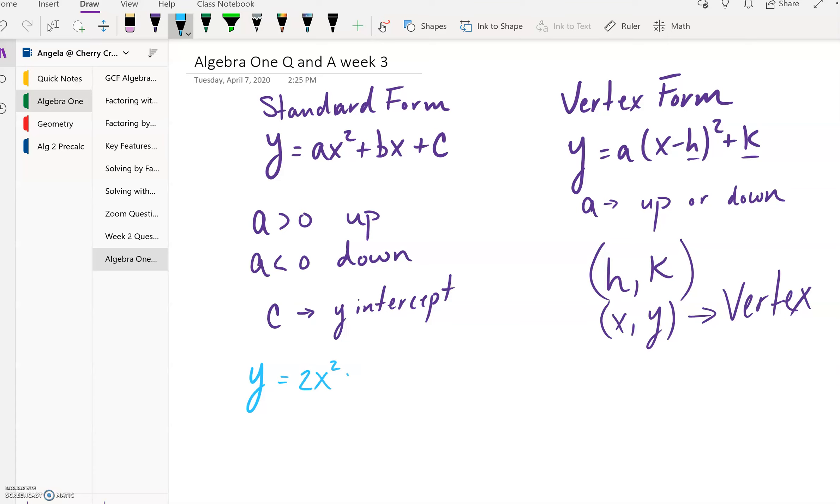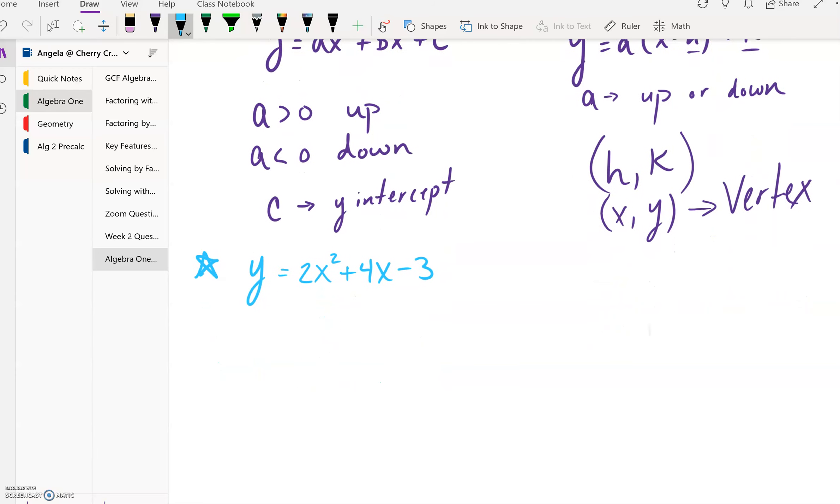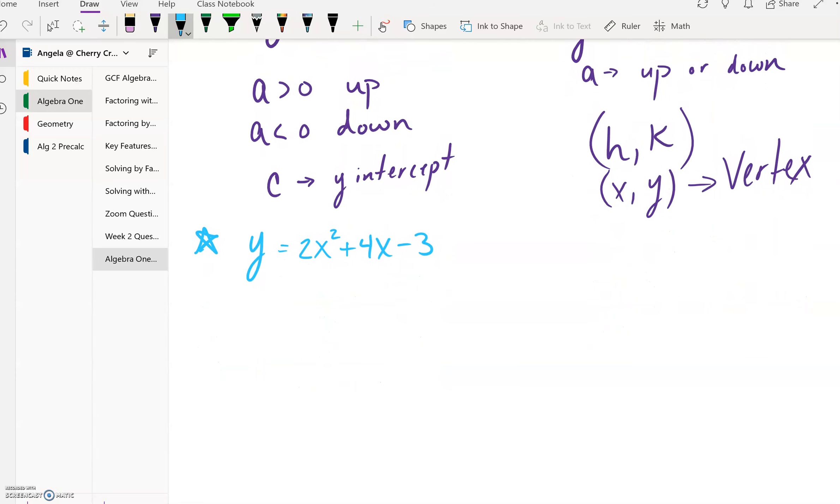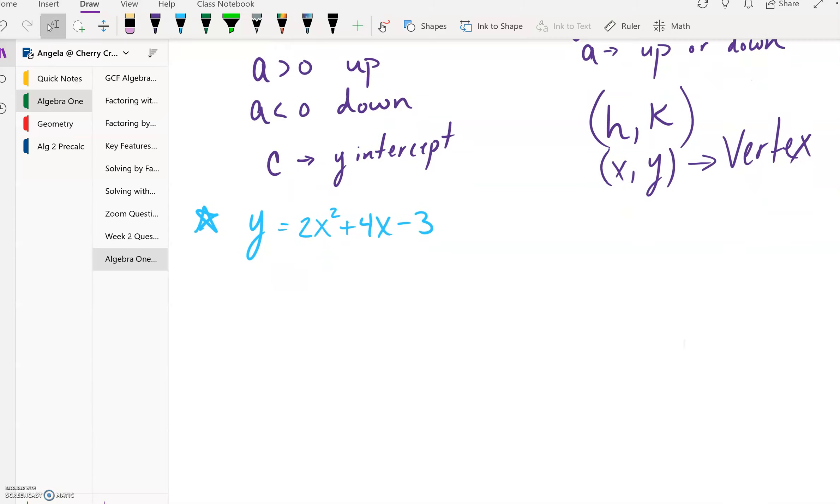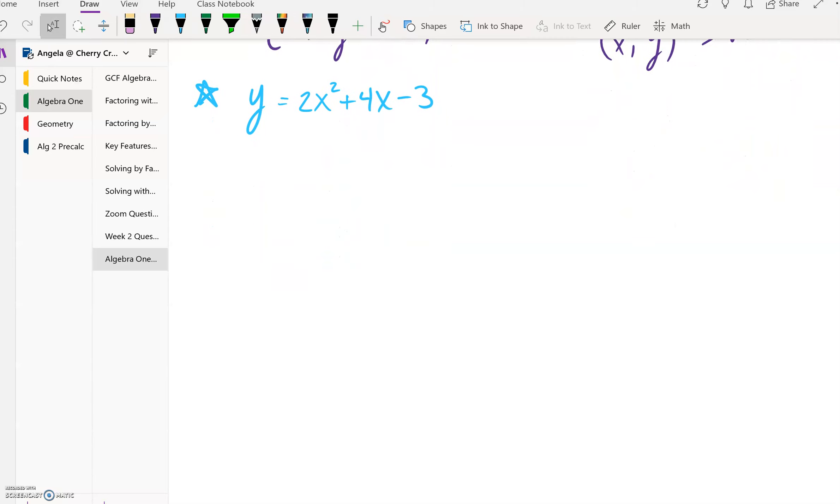And then I have a couple other pieces of information I want to share with you just to kind of help you through the week, and then you can get started on your homework. So if this is the problem that we're given in standard form, what we can do is identify—because really what we need are the a, h, and k values to be able to write this in vertex form.